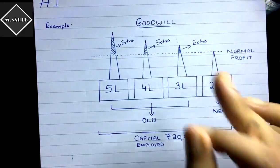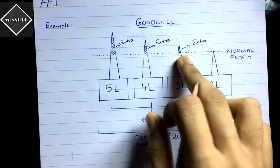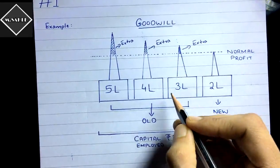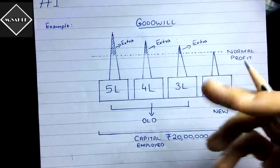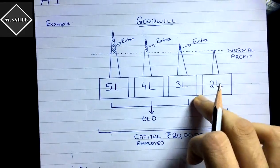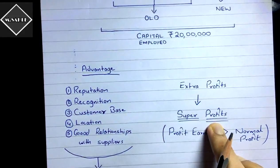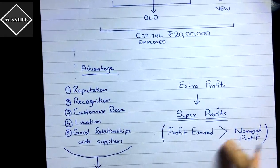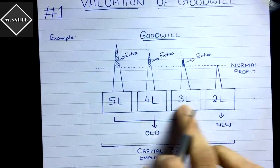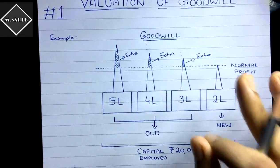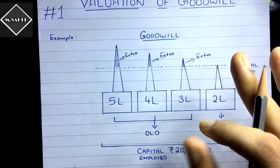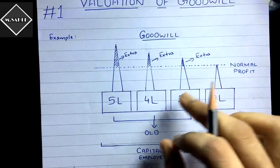If you club all those advantages together, you can say those advantages are called goodwill. Due to the goodwill of these three shops, they are earning extra profit. Goodwill is an intangible asset which helps businesses to earn extra profit — it stimulates the profit-earning capacity of the business. These extra profits in this chapter are called super profit. Whenever a business earns profit that is more than the normal profit, it is called super profit.